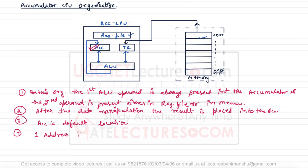The compatible instruction format is the one-address instruction format. That means every instruction will have one address. The format will have an operation code — that is, an opcode — and will have the address of the location.